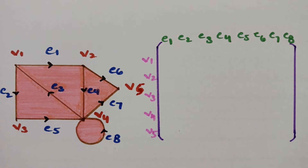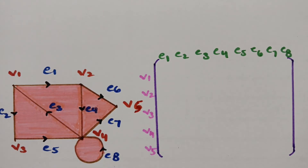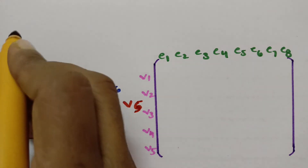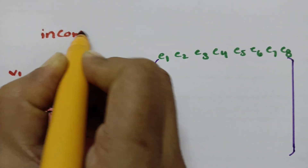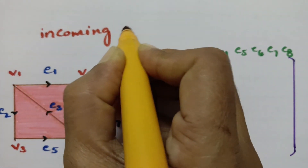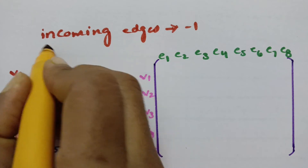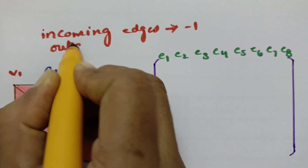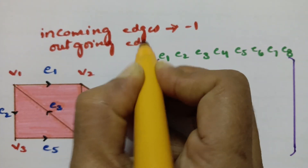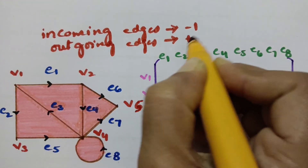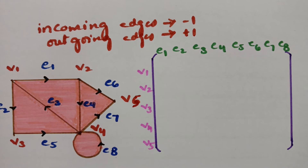The same logic applies: for all incoming edges give minus 1, and for outgoing edges give plus 1.